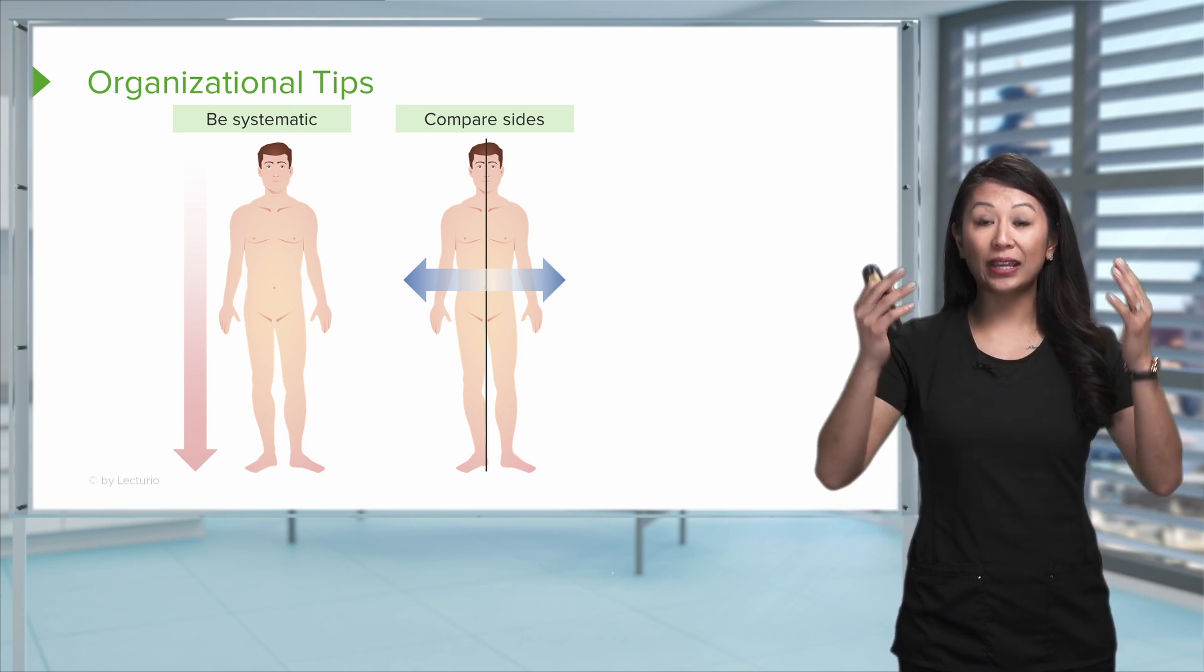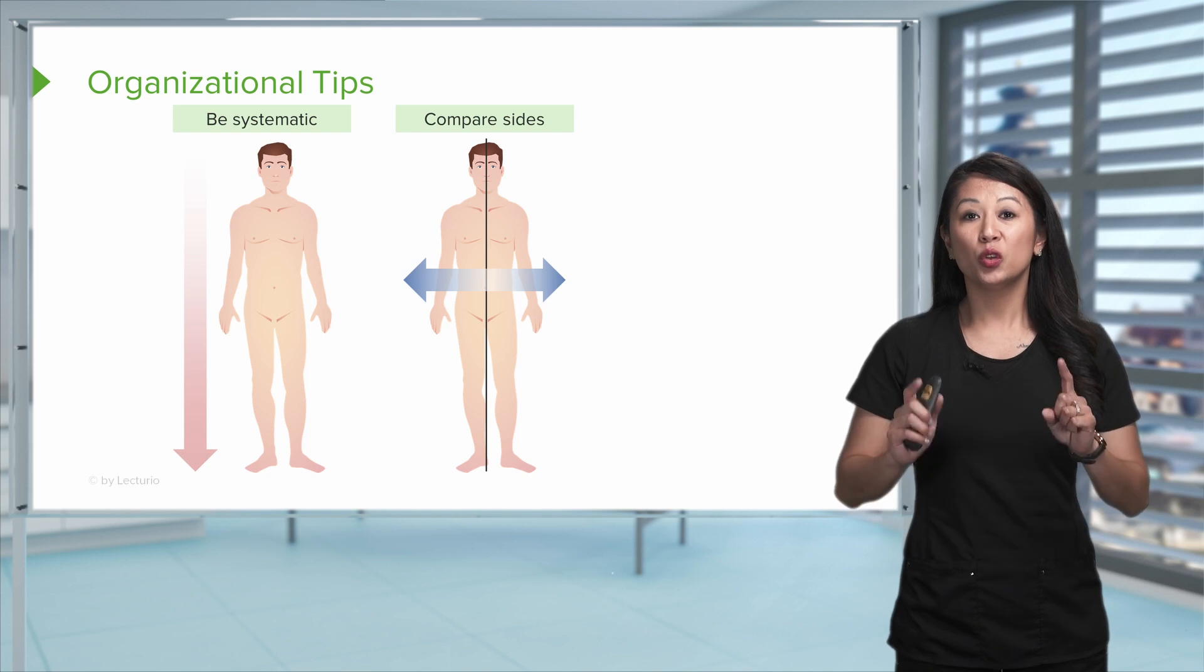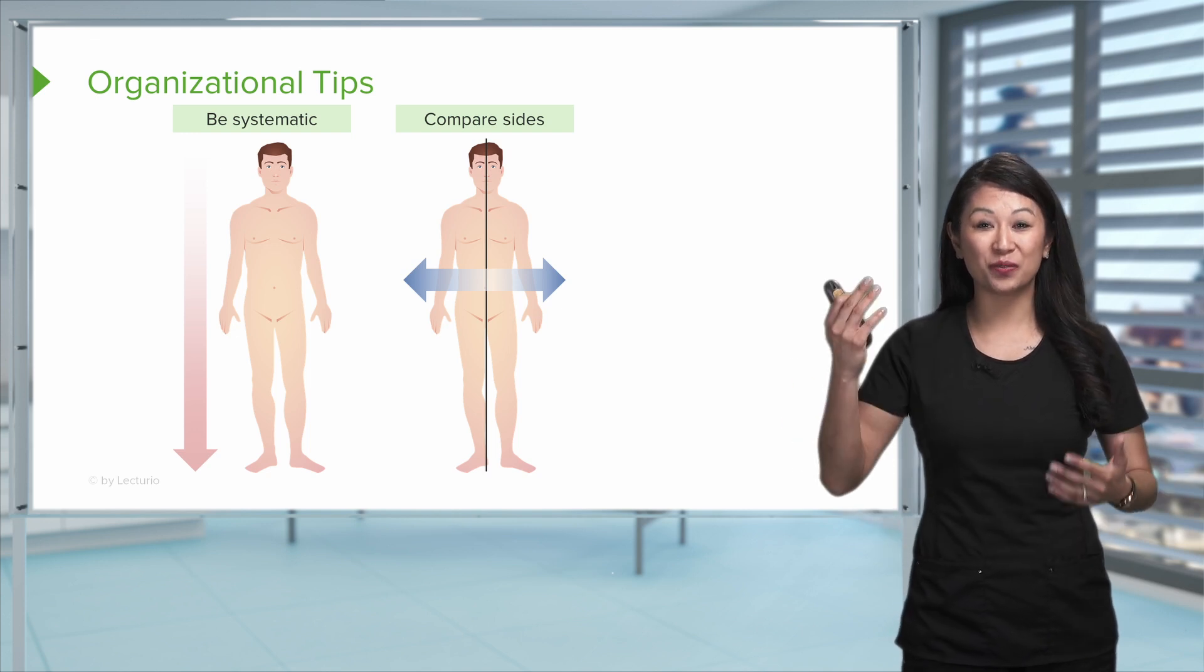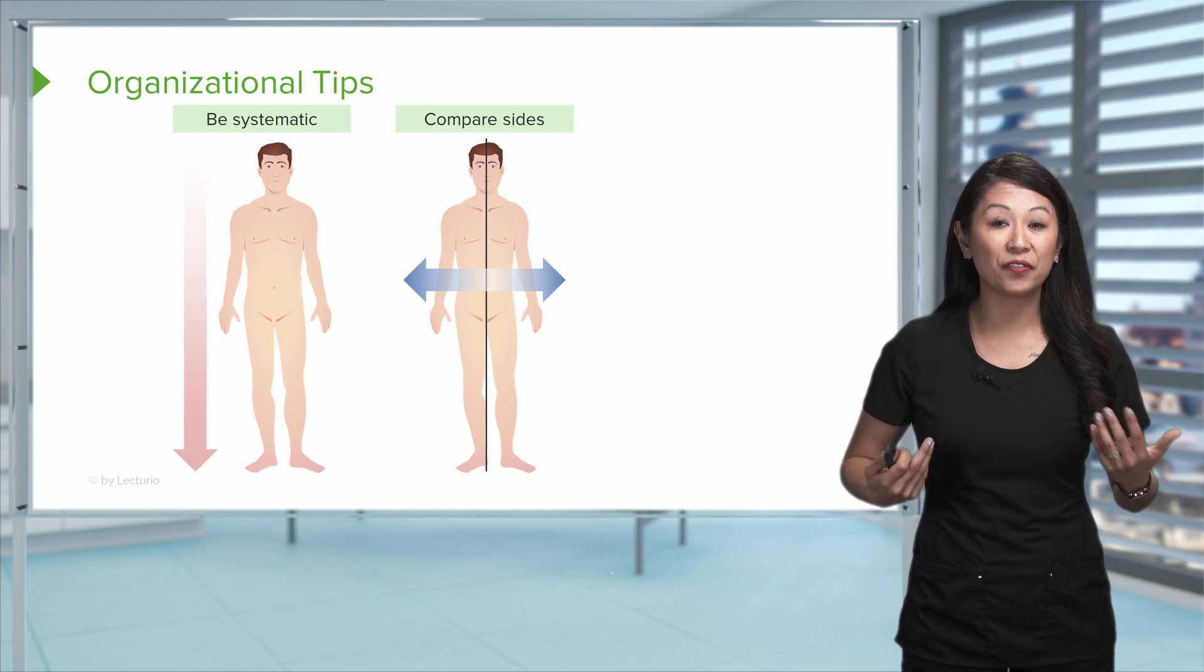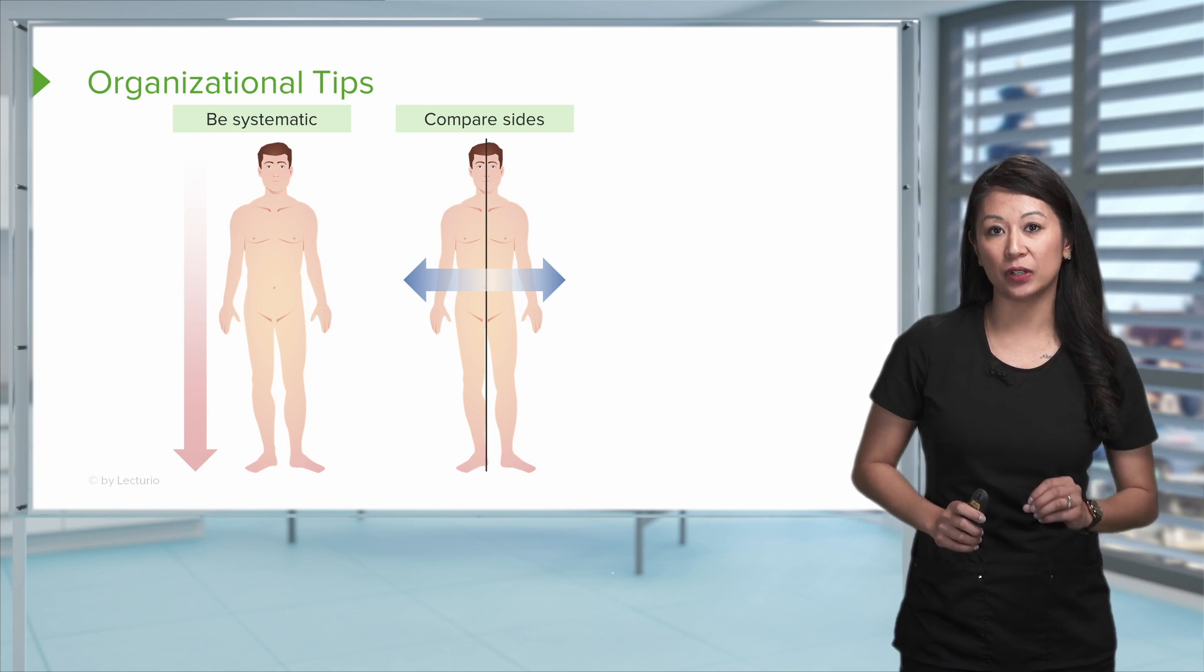Now don't forget when we are going head to toe or systematically when we're assessing our patient, you've got to compare sides, right? Because you do have two arms, you've got two eyes, you've got lung fields on each side. It's really important that we compare here because there can be differences.